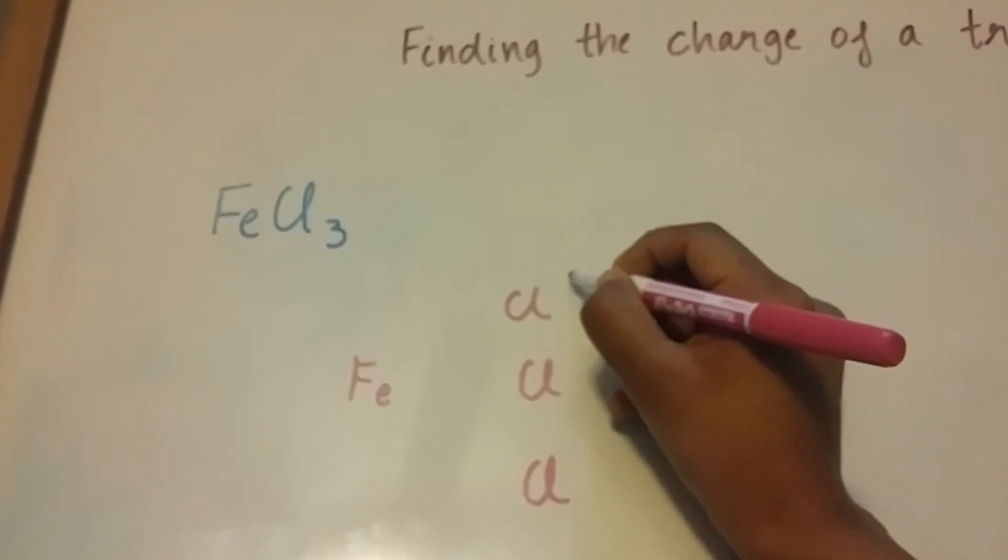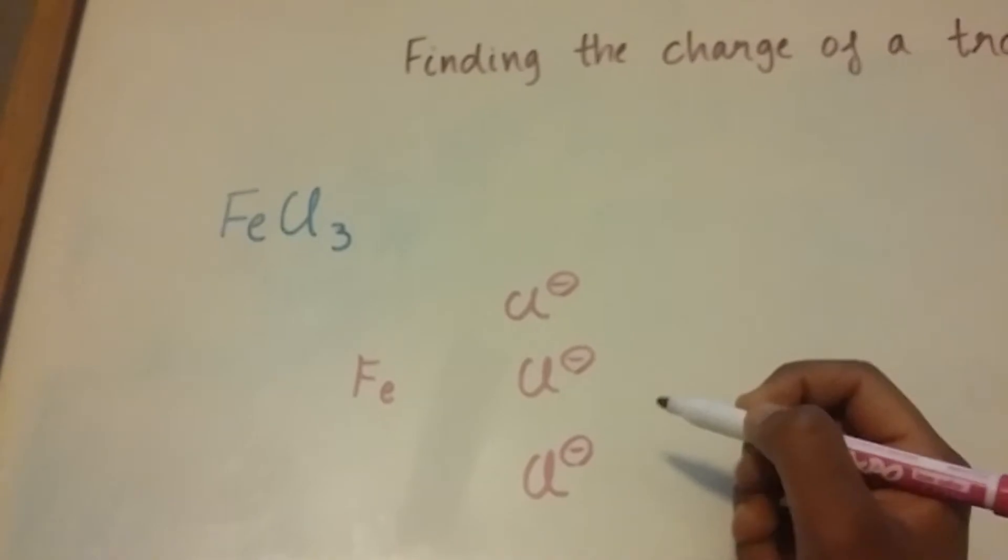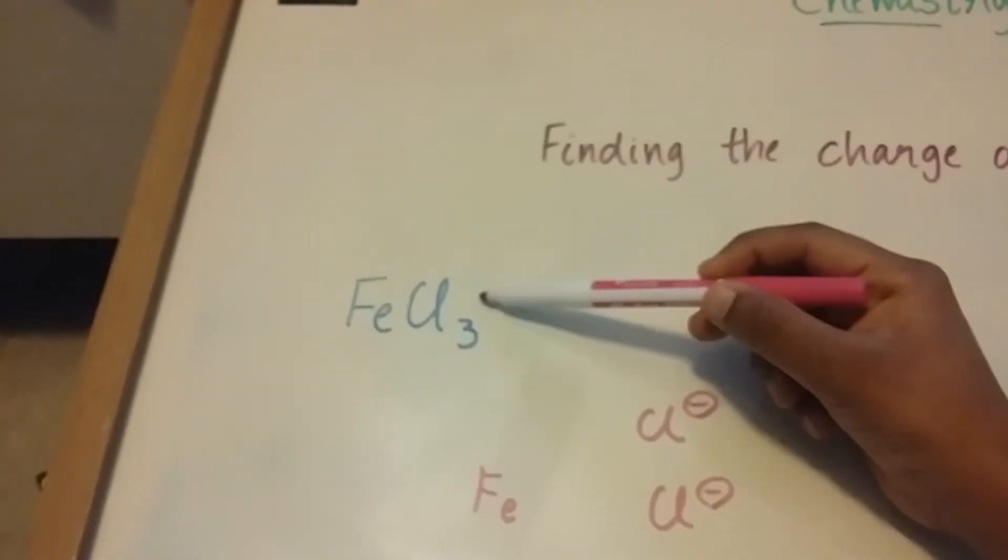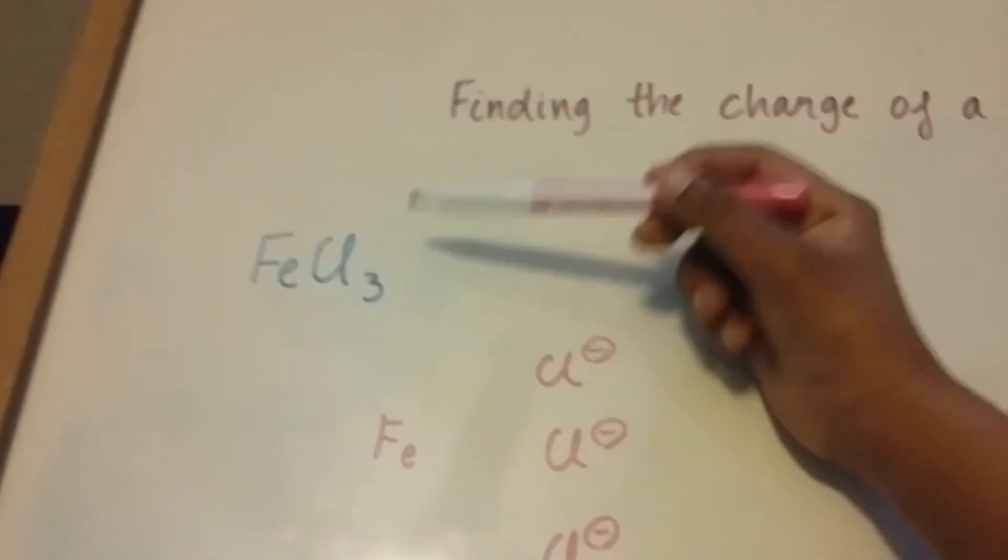We know that chlorine has a charge of minus one, so I'll put one negative charge beside each of them. And since the overall compound itself doesn't have an overall charge, it means it has a zero charge.